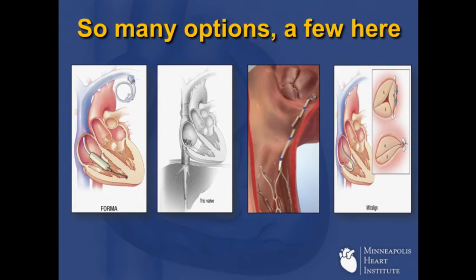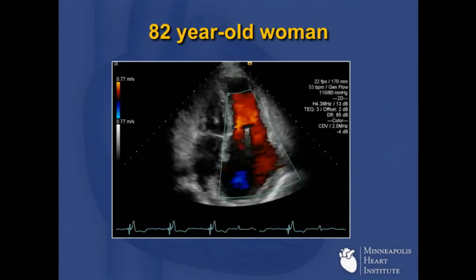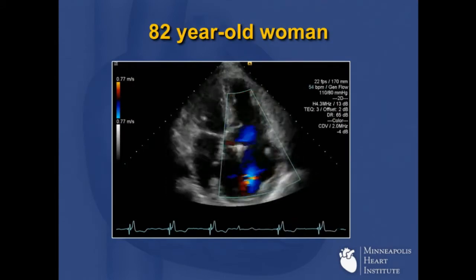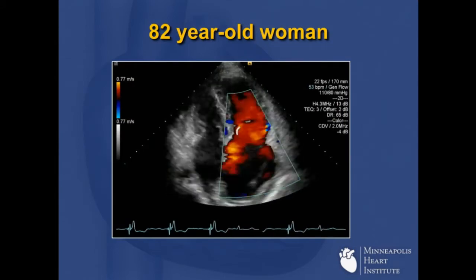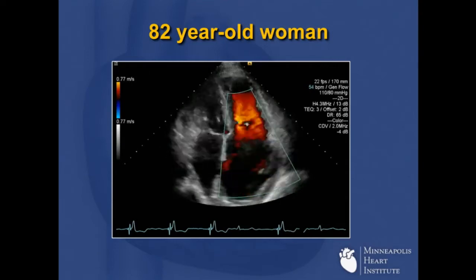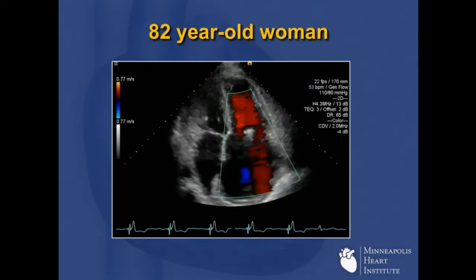There are many options out there — these are just a few listed. I think tricuspid valve is the next frontier. We all know there's a huge concentration on mitral, and we're getting close to finishing with aortic innovation — tricuspid is really where it's going. I'm going to show you a case that Richard showed you a few images of before.